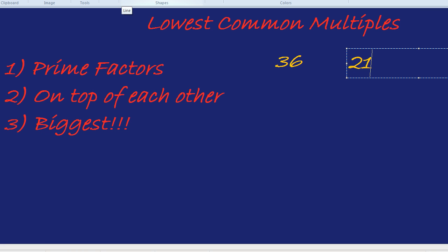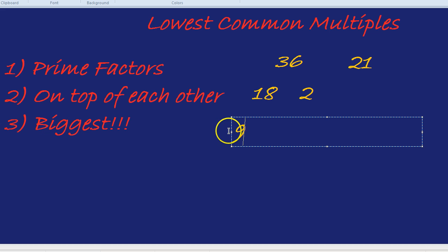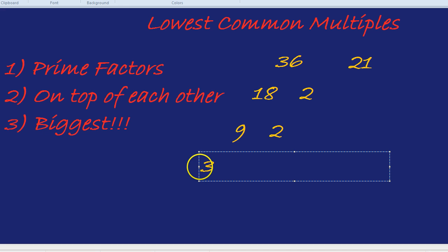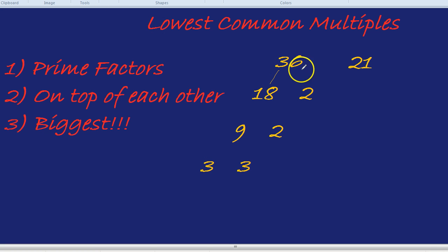We're going to do the prime factor tree. 36 can be broken down into 18 times 2, 18 can be broken down into 9 times 2, and 9 can be broken down into 3 times 3. We're going to circle the prime numbers and highlight those prime factors.